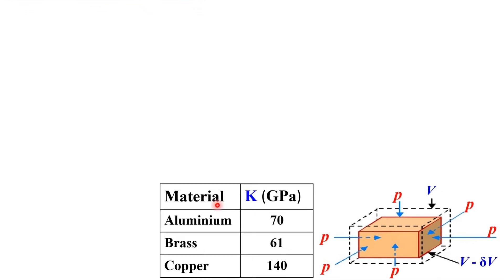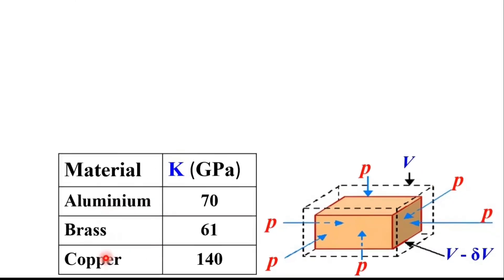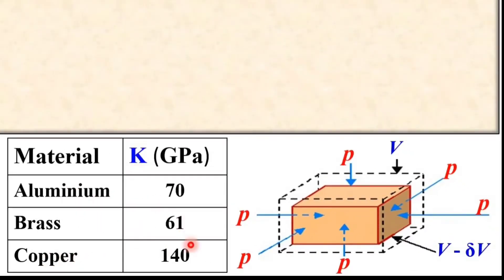Now, the importance of bulk modulus. The first column is the material and the second column is the bulk modulus K with units in gigapascal. The bulk modulus of aluminium is 70 GPa and the bulk modulus of copper is 140 GPa. The value for copper is two times that of aluminium. Thus, only half the pressure is needed to reduce the aluminium sphere compared to the copper sphere of the same initial size.